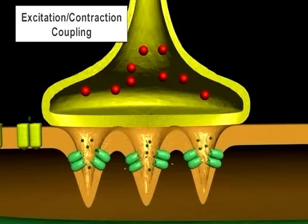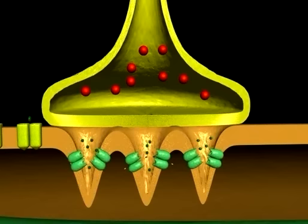The process of excitation-contraction coupling consists of all those processes involved between the time of generation of the action potential on the muscle sarcolemma and the actual contraction.